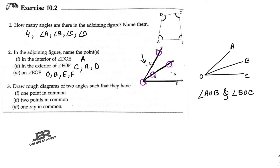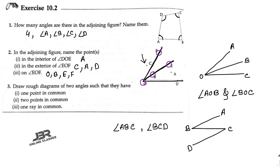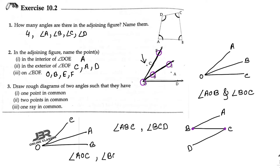Next: two points in common. You can draw it like this — suppose A, B, C, D. So angle ABC and angle BCD both have two common points, that is point B and point C. Next: one ray in common. Suppose OA is the common ray in both angle AOC and angle BOA — OA is the common ray.